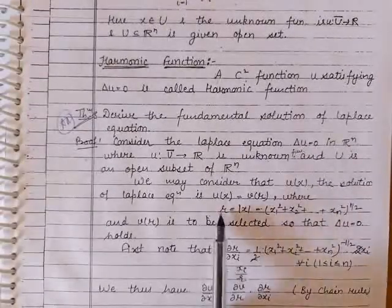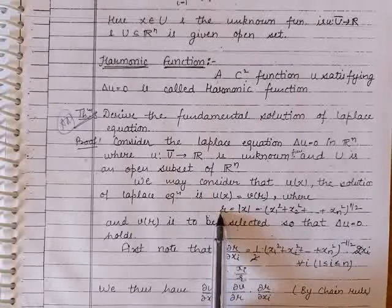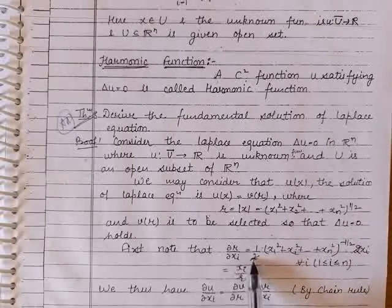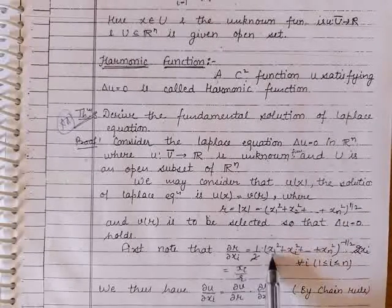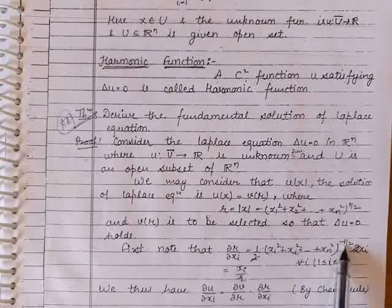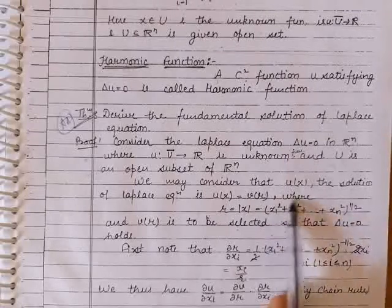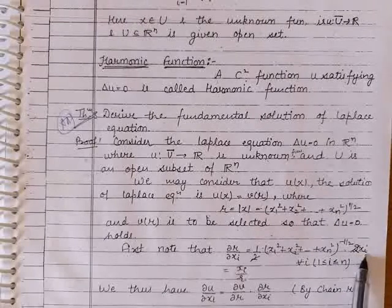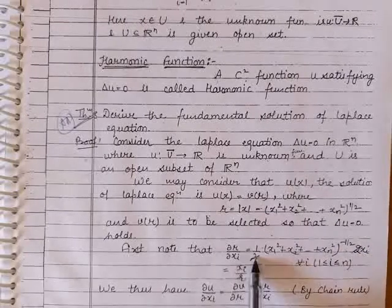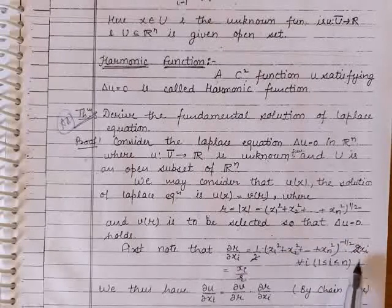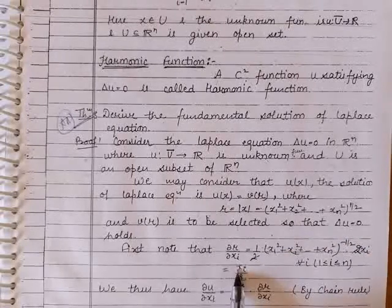Now let us find the partial derivative of r with respect to xᵢ. Differentiating, this becomes (1/2)(x₁² + x₂² + ⋯ + xₙ²)^(−1/2) times 2xᵢ. The 2 cancels and shifting the remaining factor to the denominator gives ∂r/∂xᵢ = xᵢ/r.